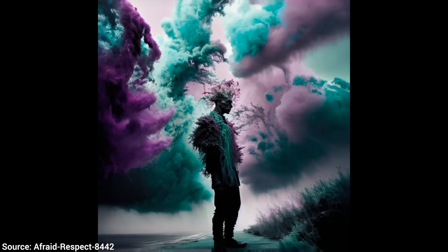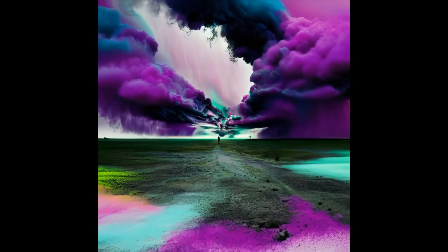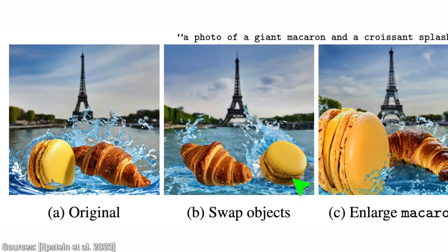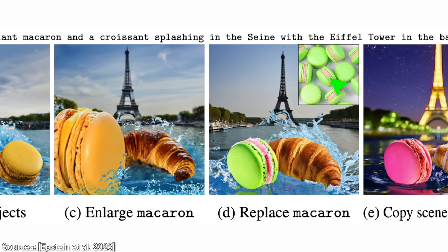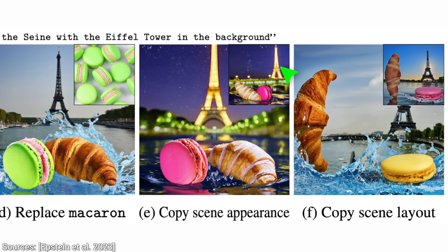Seven — in the meantime, Google just published a really cool paper on how to guide these image generator AIs with natural language. First, we can ask for an image of a giant macaron and croissant in front of the Eiffel Tower. What is surprising is that without generating a new image, we can swap these objects, then enlarge the macaron, and if we don't like it, replace it with a different one — or even better, use our own photo and ask it to recapture its appearance. The lighting now also has an effect on these objects, not just the background. Interacting with text-to-image AIs via natural language — how cool is that?